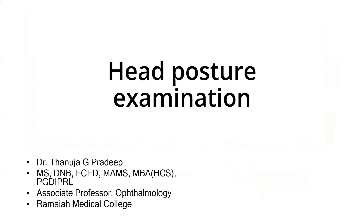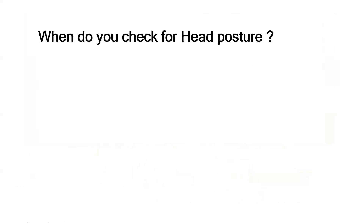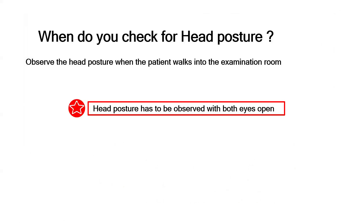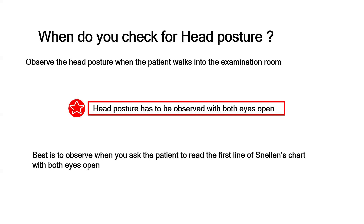In this video we'll learn about head posture examination. The best time to observe head posture is when the patient walks into the examination room. Head posture must be observed with both eyes open — covering one eye will give incorrect results. The best method is to ask the patient to read the first line of the Snellen chart with both eyes open, as any abnormal head posture will be adopted then.